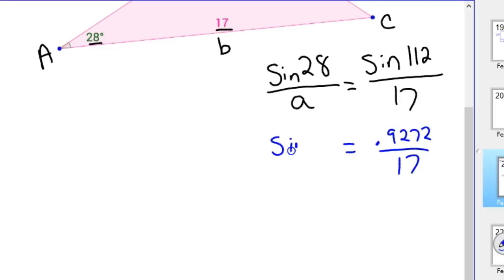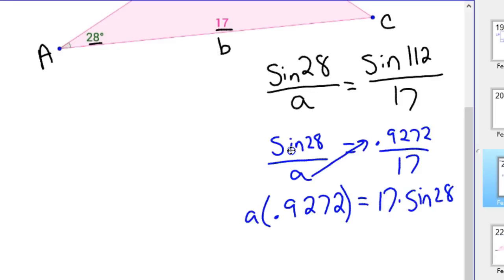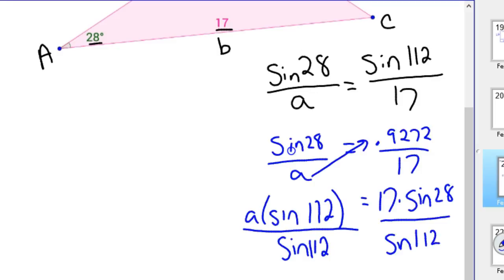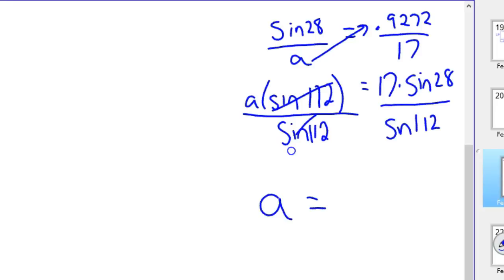So we basically have .9272 over 17 equals sine of 28. But what's nice is you could just type it all into your calculator at once. We're going to cross multiply. So you're taking a times sine of 112, that's the .9272, equals, times a, equals 17 times sine of 28. And so this is also sine of 112. We're dividing both sides, they cancel.